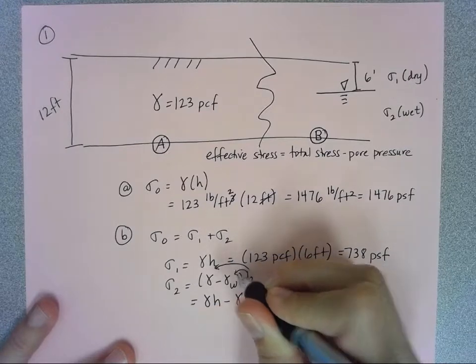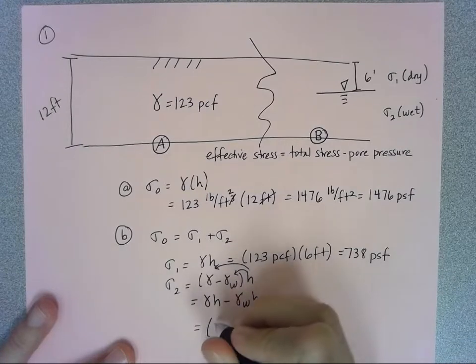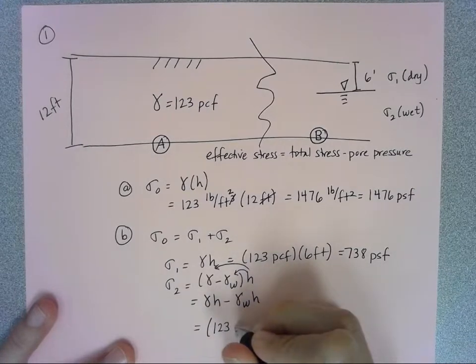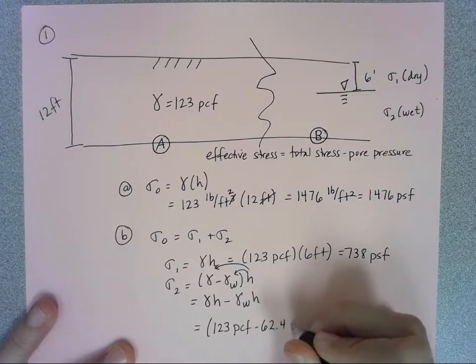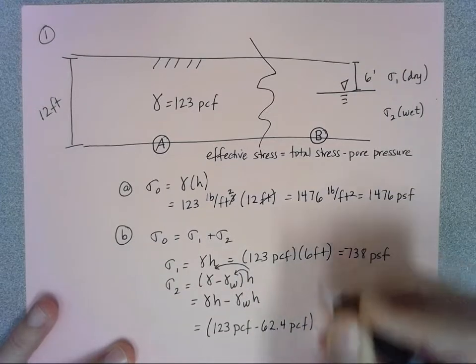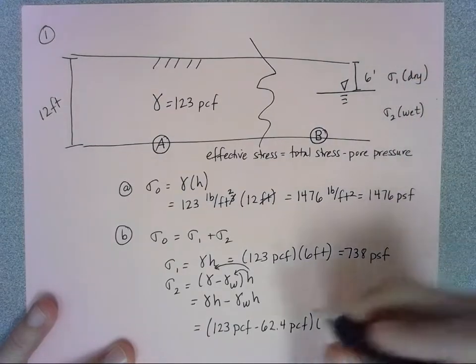All right, so in this case my gamma is 123 pounds per cubic foot and I'm subtracting 62.4 pounds per cubic foot and I'm multiplying it by that whole height of that wet layer which is six feet.